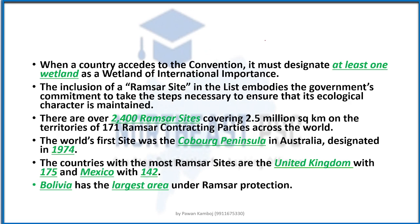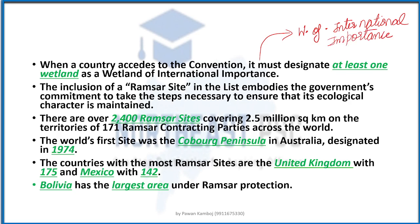When any country accepts the convention, it must announce at least one wetland of international importance. This is the first step — if you want to become a member, you must select one area in your domain as a wetland of international importance. Currently there are more than 2,400 Ramsar sites covering a large area, in more than 171 countries. The first site entered into the Ramsar list was Coburg Peninsula in Australia. The most Ramsar sites are in the UK with 175, and Mexico has 142.